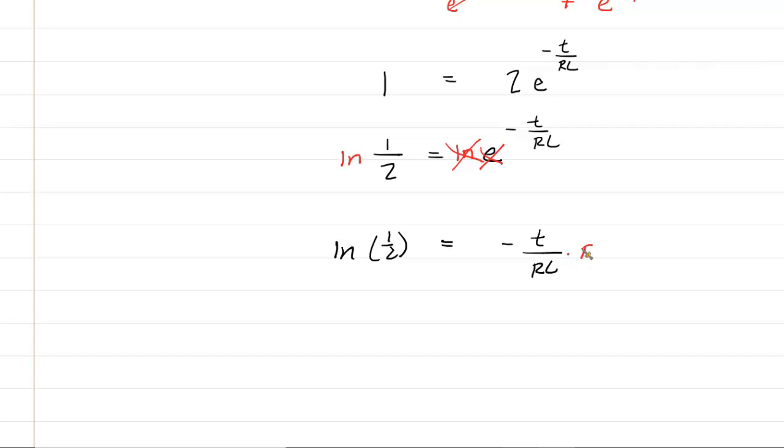We'll multiply both sides of the equation by RC so that it cancels out on the right-hand side. So now we have RC ln of one-half equals negative T. Now, we could just divide both sides by negative one, so that would make this side negative and the other side positive. So there is your expression for the time.